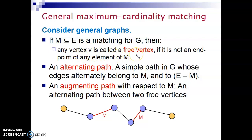First, free vertex. What does that mean? Any vertex V is called a free vertex in a graph G if it is not an endpoint of any element of the matching.